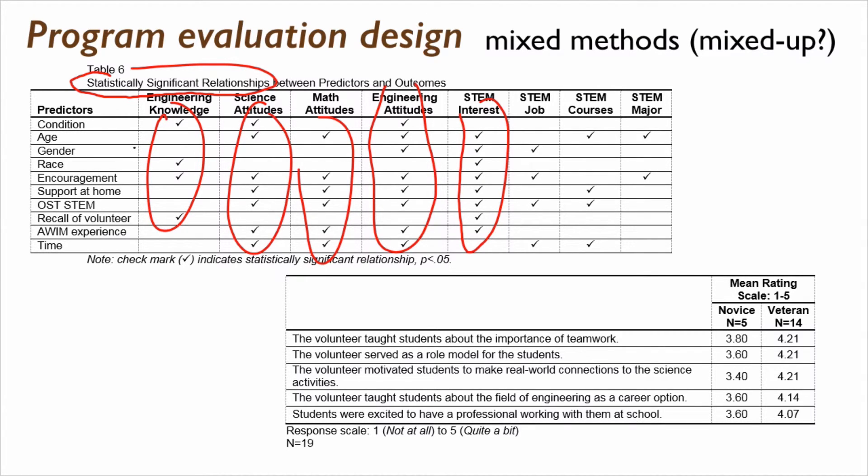In this example, there's strong STEM interest and great engineering attitude, not so bad math and science. Engineering knowledge, not so hot. There's interest in STEM, but for a STEM major, for an actual career, not so much.